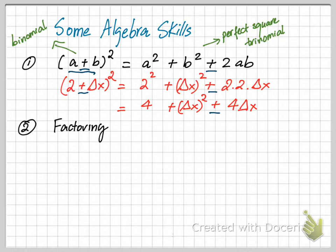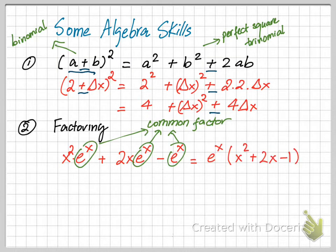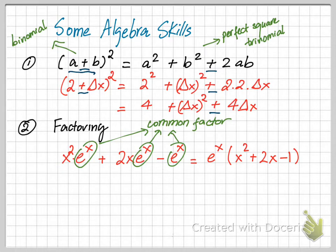Second: factoring. So if you have a mathematical expression and you want to factor it into different factors, the first thing you want to do is find a common term. For example, the common term of x squared e to the x plus 2x times e to the x minus e to the x is e to the x, because e to the x appears in all three terms.